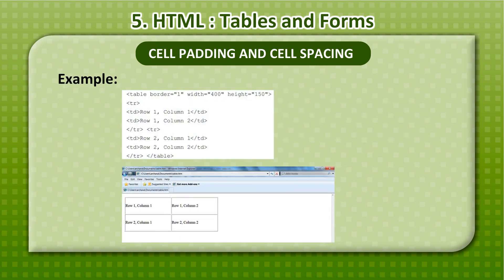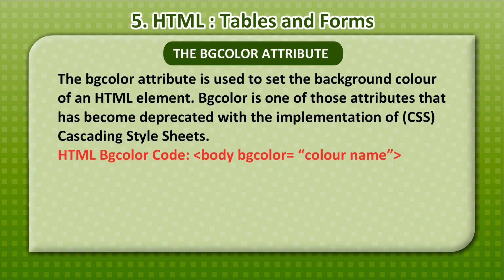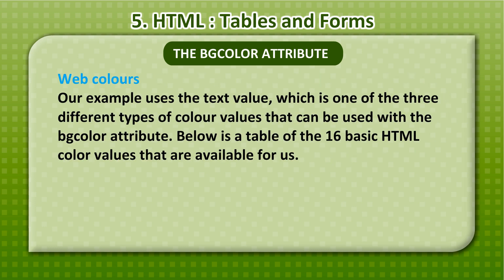The BGColor Attribute: The BGColor attribute is used to set the background color of an HTML element. BGColor is one of those attributes that has become deprecated with the implementation of CSS — cascading style sheets. The syntax is: body bgcolor=color name. Our example uses the text value, which is one of the three different types of color values that can be used with the BGColor attribute.